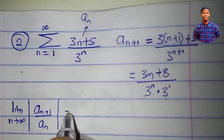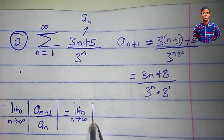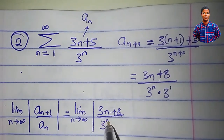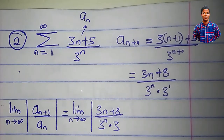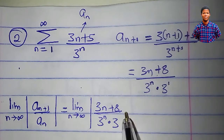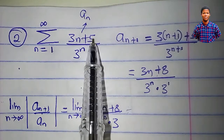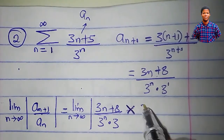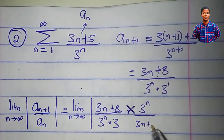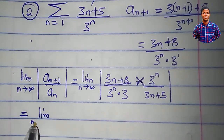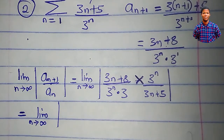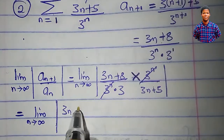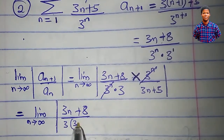Forming the ratio a sub n plus 1 over a sub n, we multiply by the reciprocal of a sub n, which is 3 to the power of n all over 3n plus 5. The 3 to the power of n terms cancel, leaving us with the limit as n approaches infinity of 3n plus 8 all over 3 times the quantity 3n plus 5.